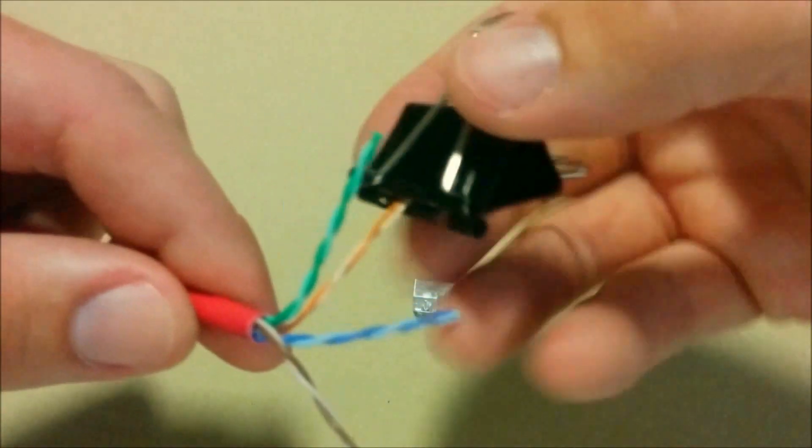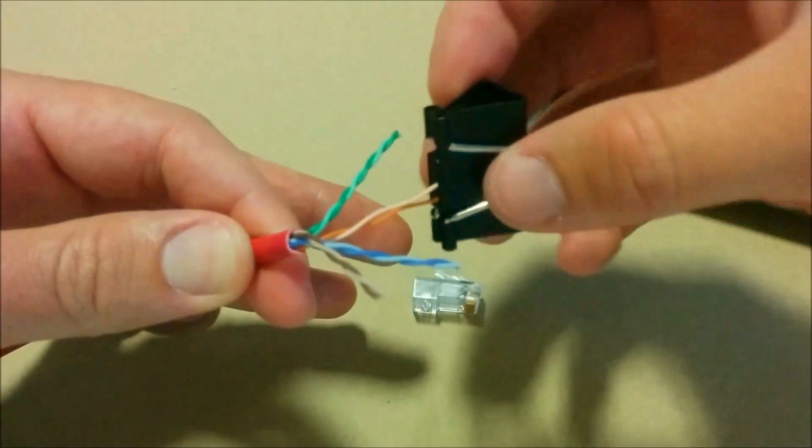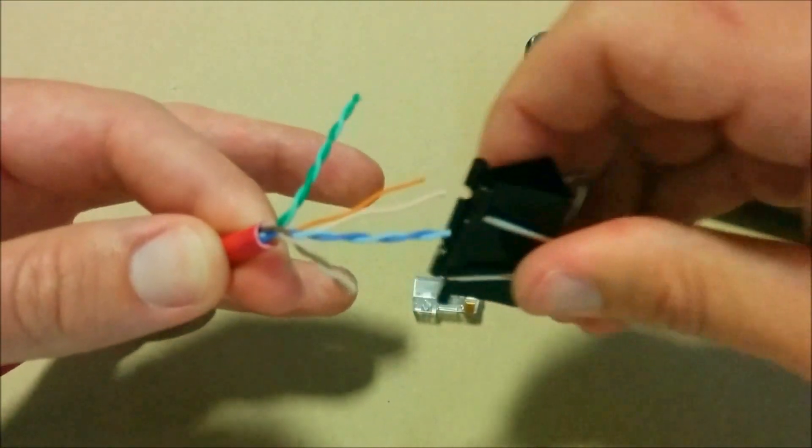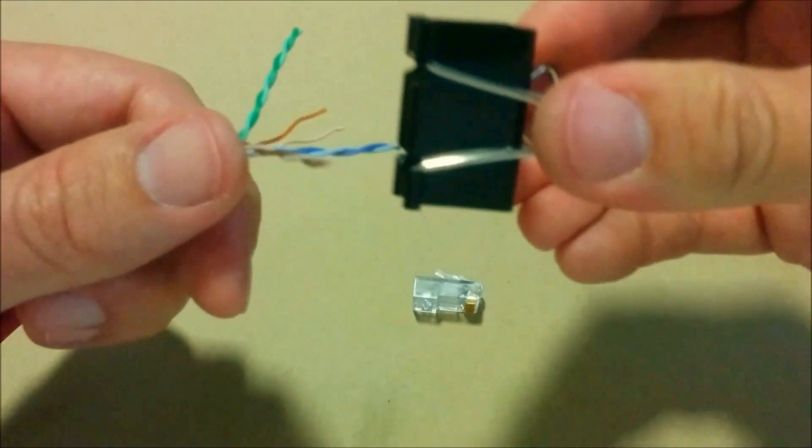What I basically try to do is get it as close to the end of the cable as possible. The orange is usually the easiest. What it does is it keeps both wires from untwisting.